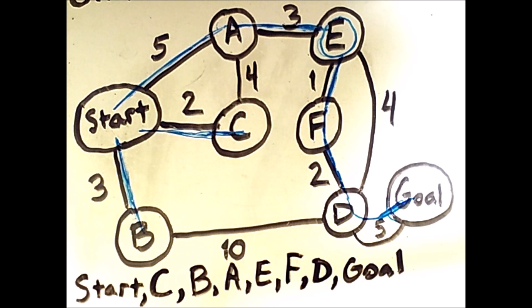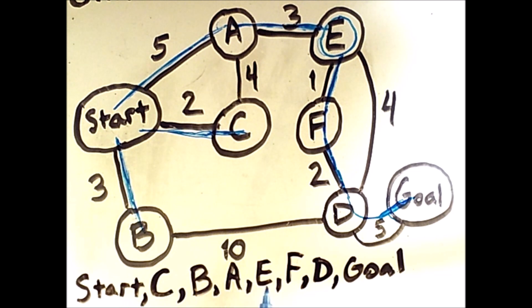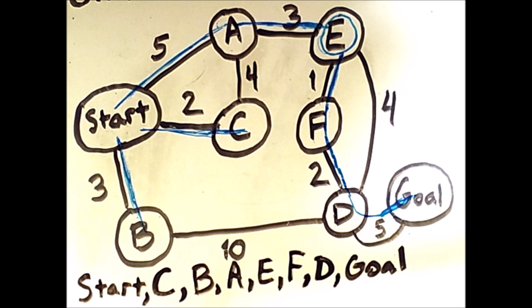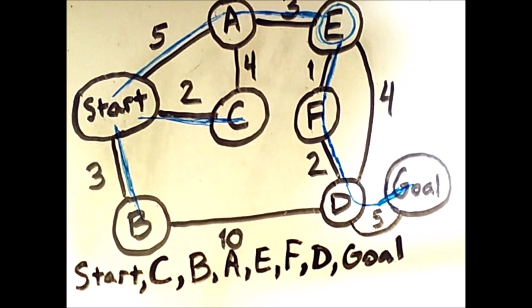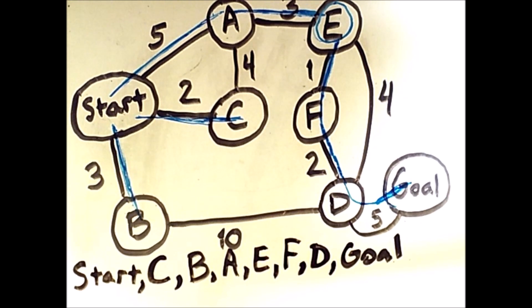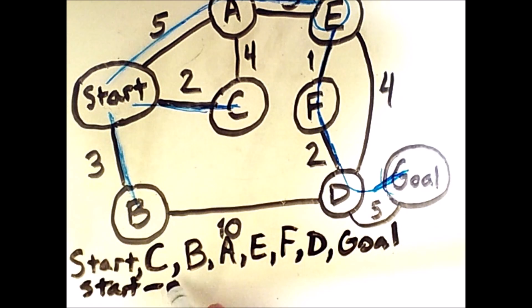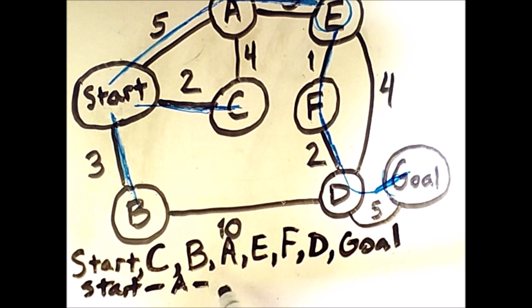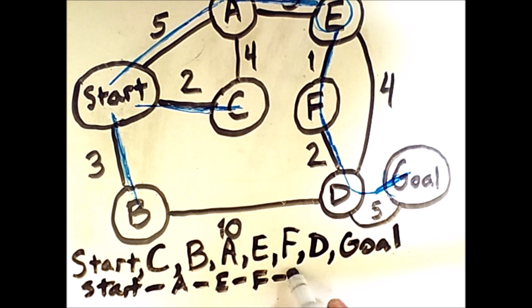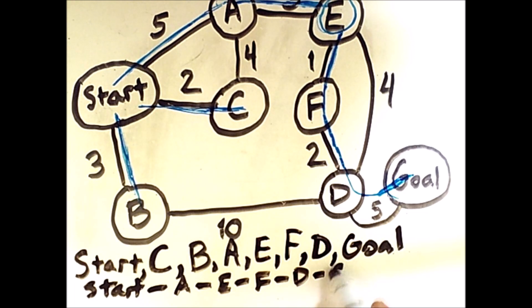So the states we visited in order were start, C, B, A, E, F, D, and then the goal. However, the actual optimal path that we found was start, A, E, F, D, goal.